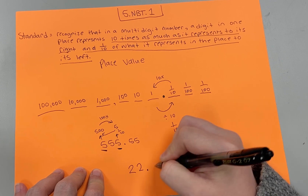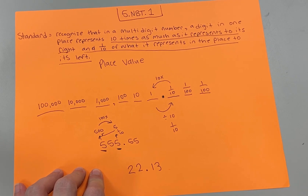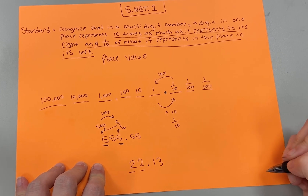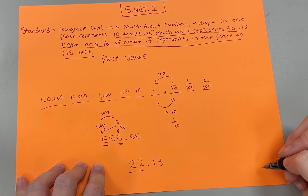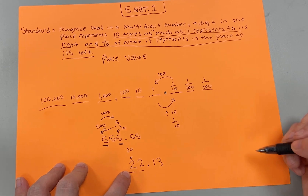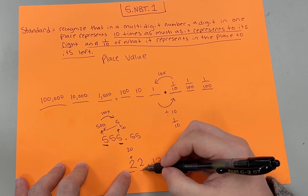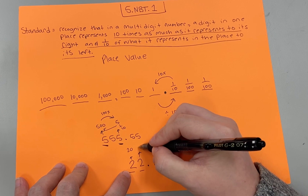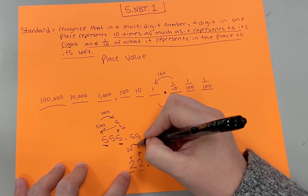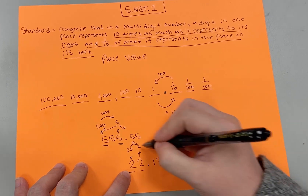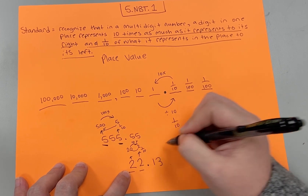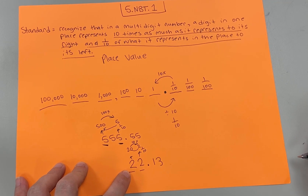Let's try one more: twenty-two and thirteen hundredths. I want you to compare the values of the twos. The value of the two in the tens place is twenty. The value of the two in the ones place is two. Twenty is ten times bigger than two, which means that two is, you guessed it, one-tenth of twenty.